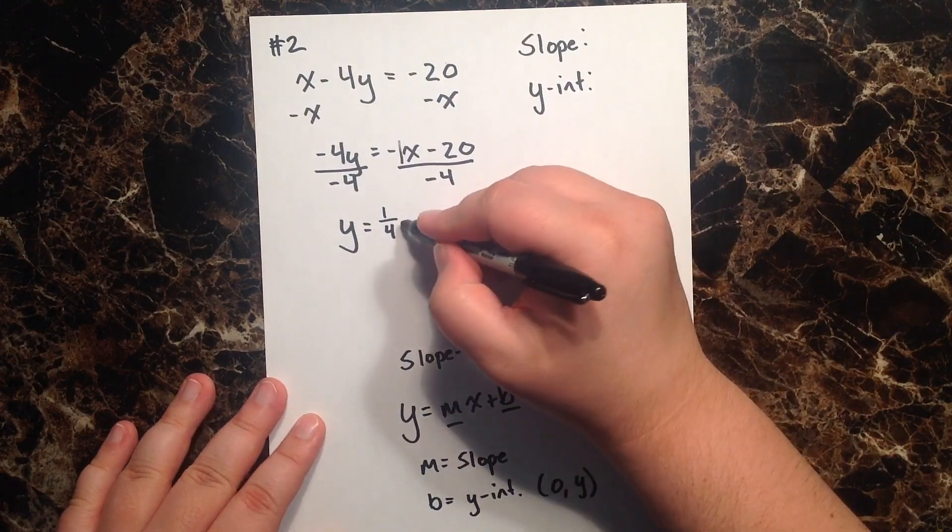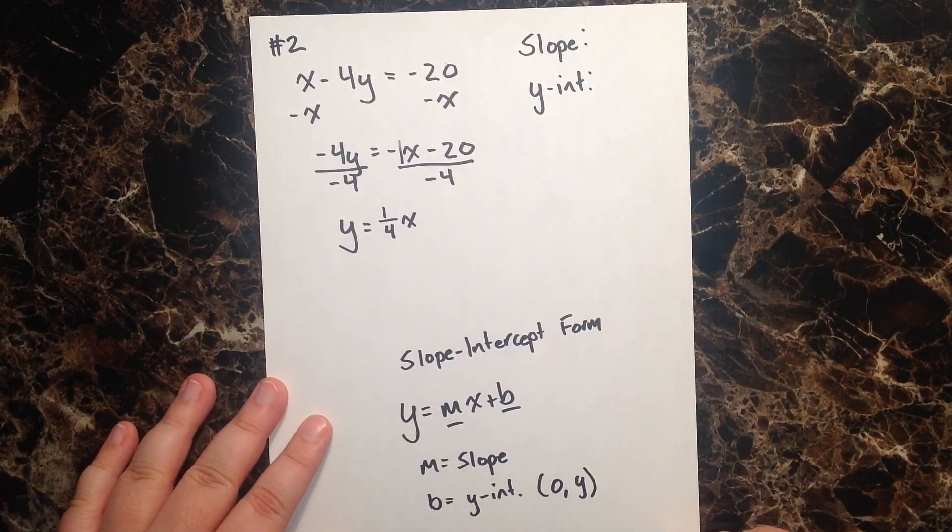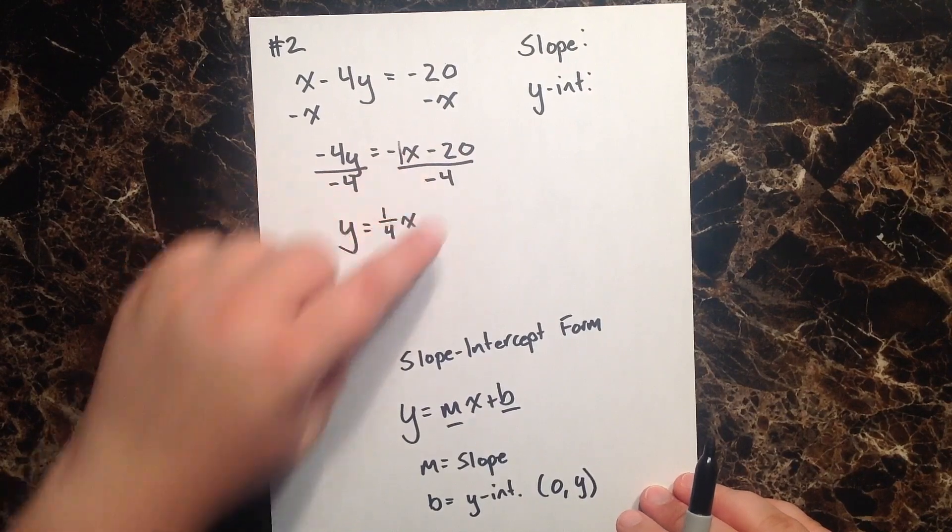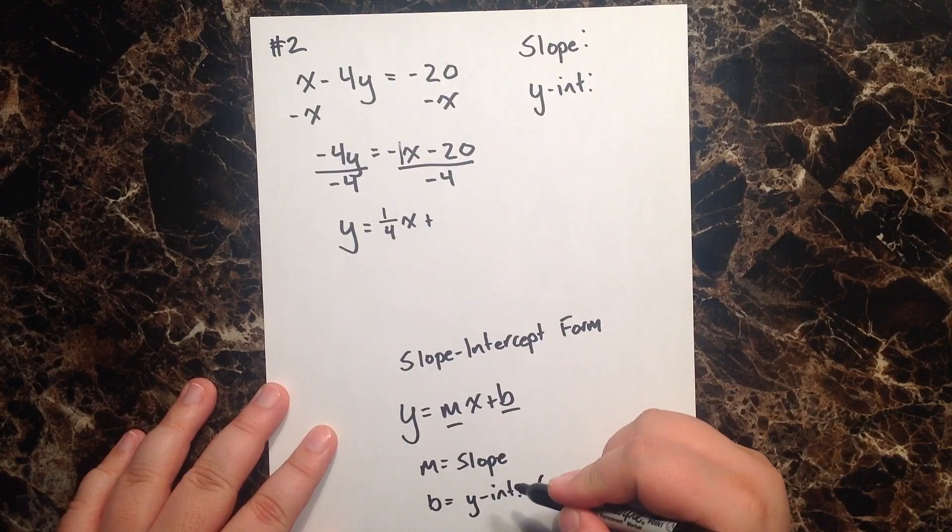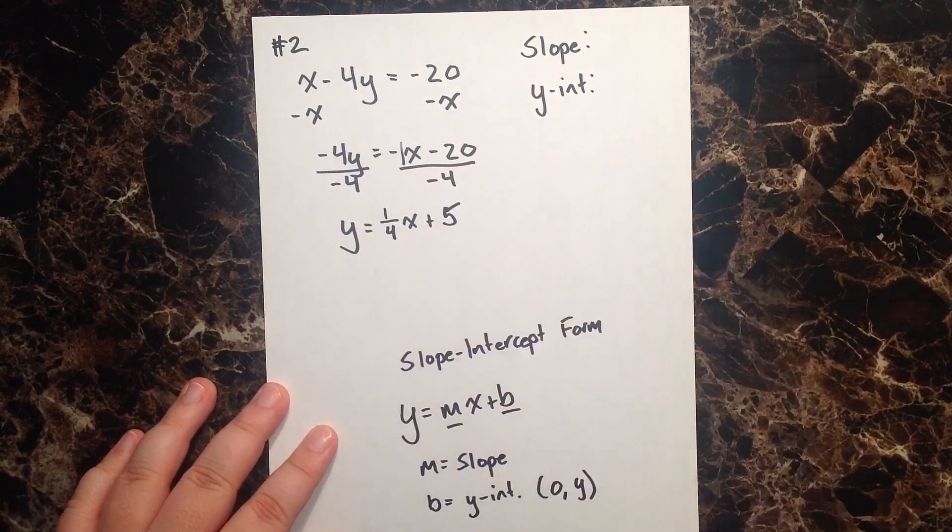Let's not forget to put our x in, and then we have a negative 20 over a negative 4, which simply reduces to a positive 5.